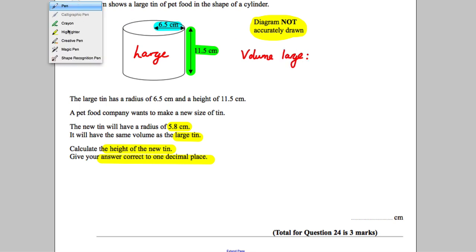How do you work out the volume of a cylinder? You work out the area of the circle on top and multiply it by the height of the cylinder. So the volume is going to be equal to πr²h, which is π × 6.5² × 11.5.